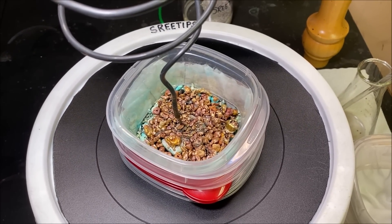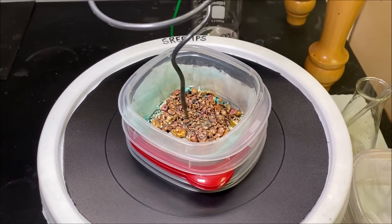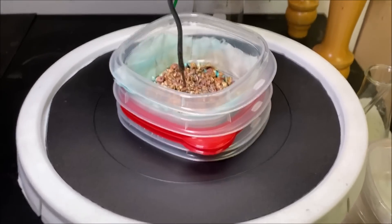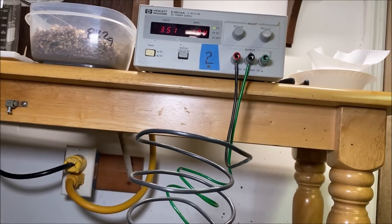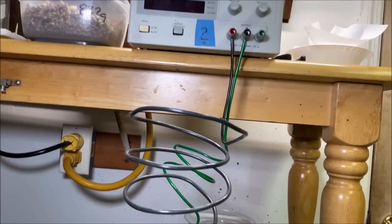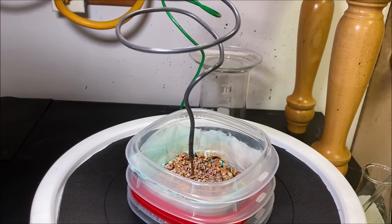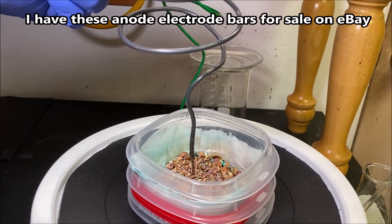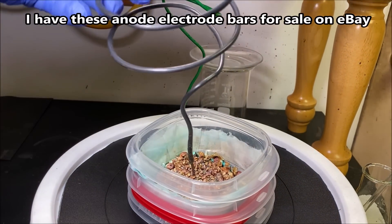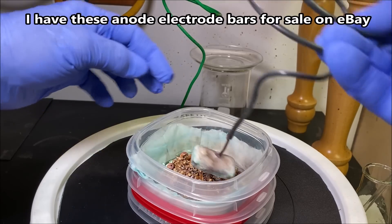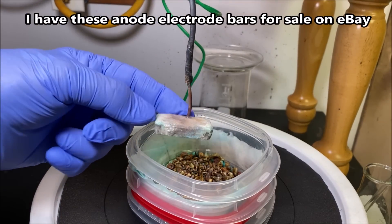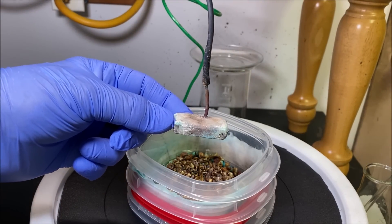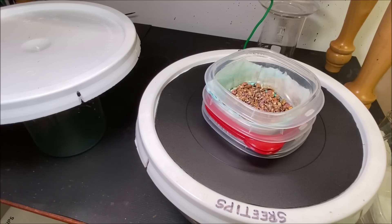The first thing we're going to do here is kill the power to this thing and take this anode electrode bar out of the way and move it. As long as we keep this thing up out of the electrolyte, we can use it over and over.